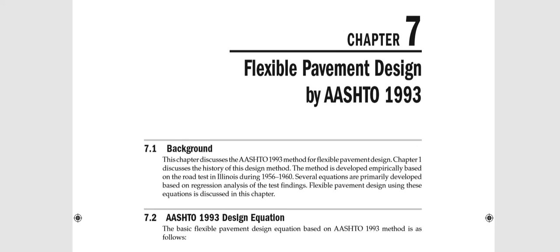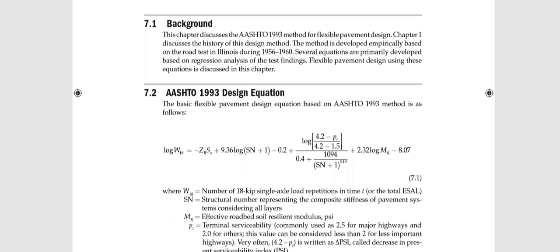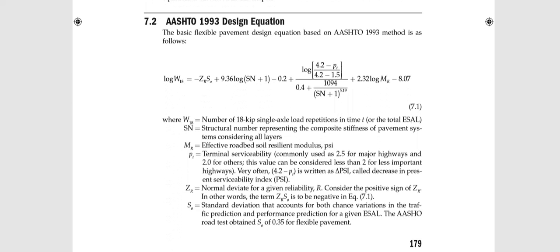This method is based on one key equation. The left side is our demand — W18 — which is simply the total ESAL, the total number of equivalent single axle loads, maybe 2 million, 10 million, or 15 million. The right side represents the capacity of the pavement. The equation looks very complicated but I will explain it one part at a time.